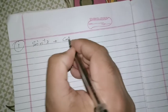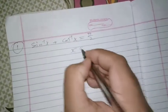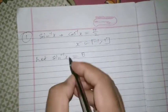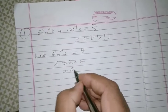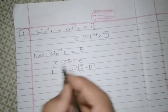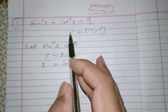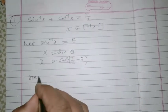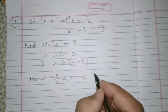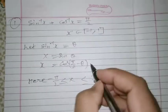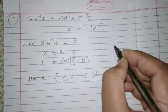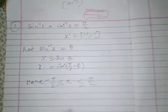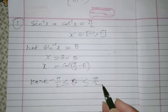Next property: sin⁻¹(x) + cos⁻¹(x) = π/2, where x belongs to minus 1 to 1. To prove this, let sin⁻¹(x) = θ, so x = sin θ. Now we can write sin θ = cos(π/2 − θ). For the domain check, θ belongs to minus π/2 to plus π/2, so we need to verify that π/2 − θ lies in the domain of cos⁻¹, which is 0 to π.